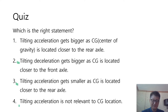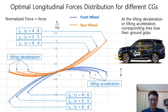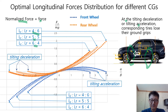Did you get the answer? Here we have three sets of graphs for the optimal longitudinal force distribution for three different CGs. Let's call the normalized force just 'force' for simplicity throughout this video. At the tilting deceleration or tilting acceleration, the corresponding tires lose their ground grip. This graph shows three cases of CG in one place — the ratio of L_F to L_R is 4:6, 5:5, and 6:4. We can compare these different CGs to understand the effect of CG location along the longitudinal axis of the wheelbase.